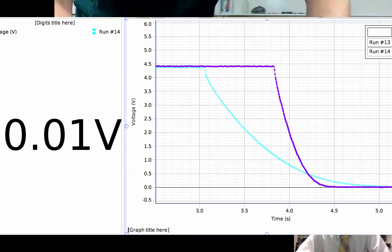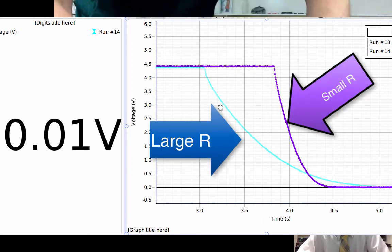So based on the two different resistances, we can see that there are different curves for charging and discharging capacitors.